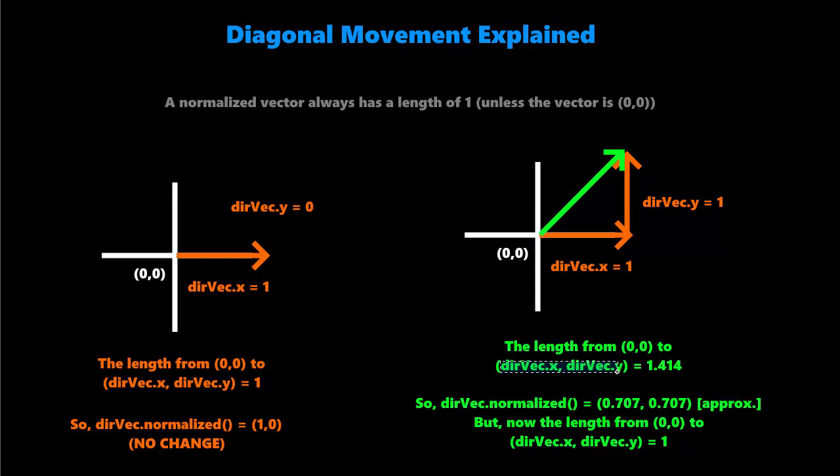to whatever the x and y coordinate is of our direction vector right here, which is 1, 1 way up here, the length of that is 1.414. That's not equal to 1.